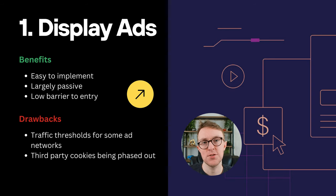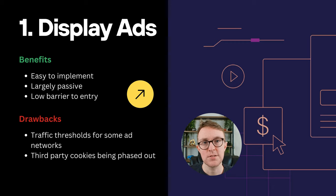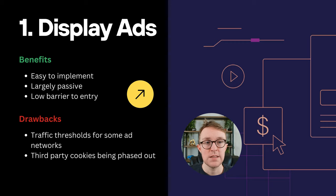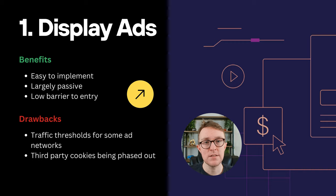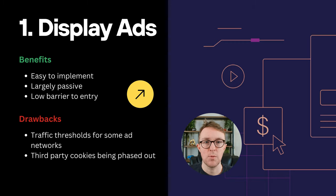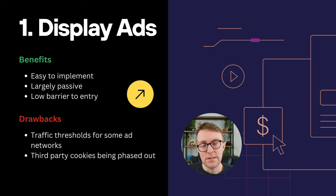The first method of blog monetization is the use of display ads. Display ads are basically just the online advertisements that you see in a blog post — the videos or images you see in the sidebar, in the adhesion slot, or in content. One major benefit is that they're really easy to implement. On Google AdSense, you can get started by just adding a snippet of code to the back end of your website. You don't have to sell the ads or negotiate any contracts — these display ad networks are programmatic and take care of that for you.